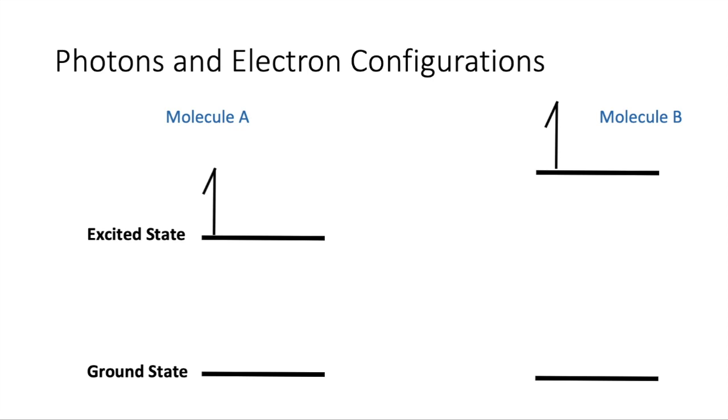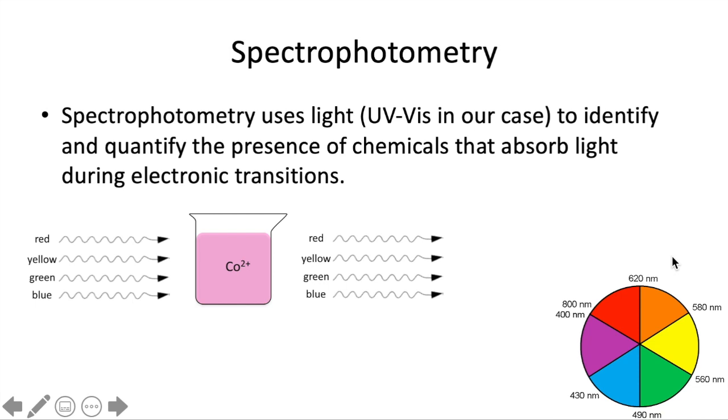So because molecule A is absorbing red, it would appear green. Because molecule B is absorbing blue, it would appear orange. And this is based on the color wheel. So we have the color wheel in the bottom right corner here. And the opposite colors are the way this interacts. So if something absorbs red, then it will appear green. If it absorbs blue, it appears orange. If it absorbs yellow, it appears violet. And vice versa.